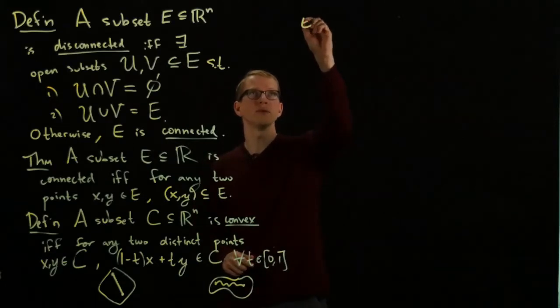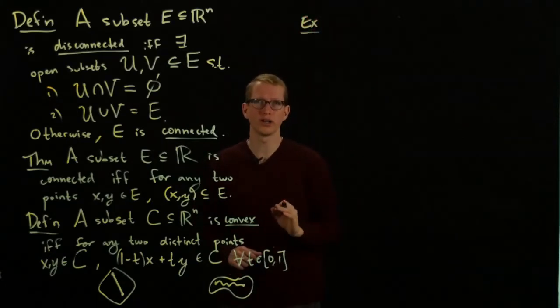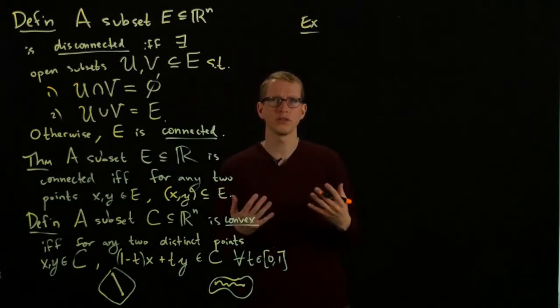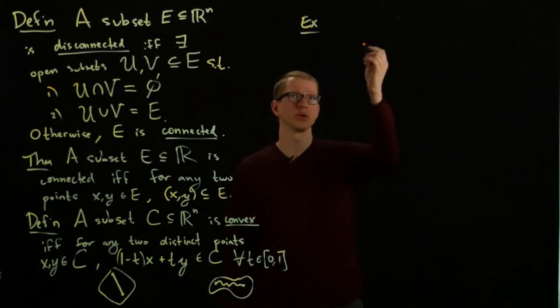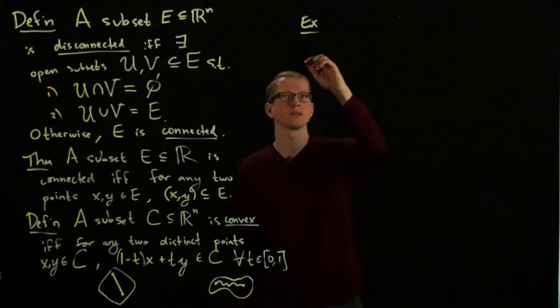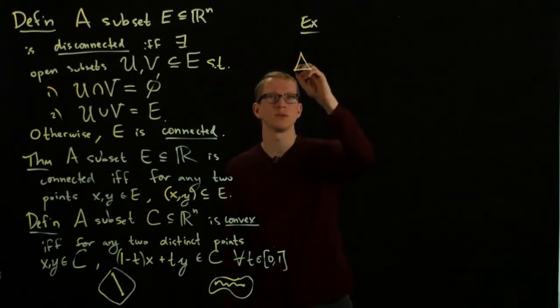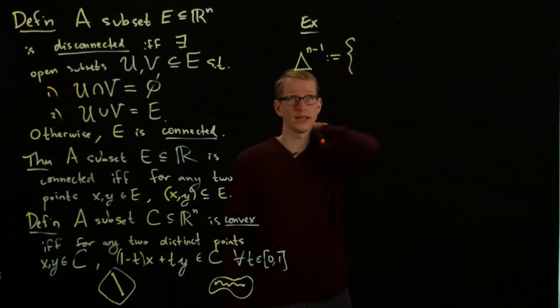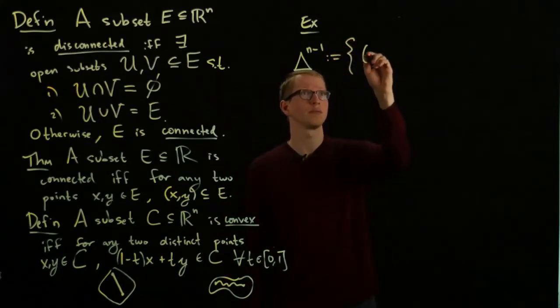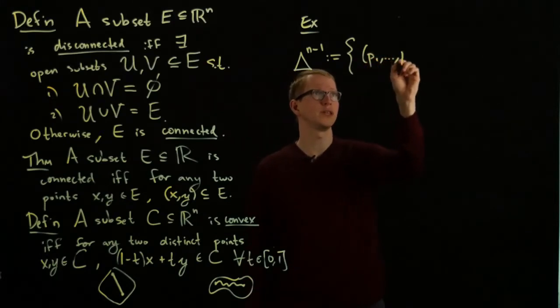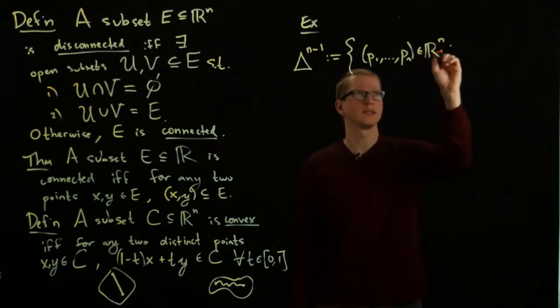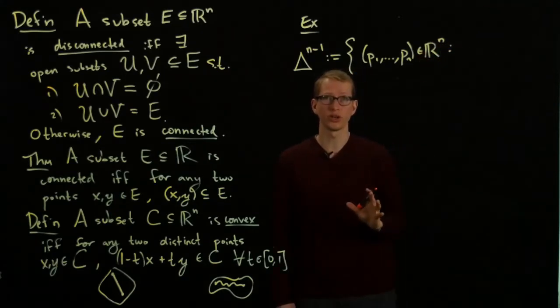We'll give an example of a very important convex subset of R^n. This is called the n-simplex, or more specifically the n-1 simplex. The n-1 simplex is denoted by Δ^(n-1), and this is the set of all points P1 up to Pn in R^n